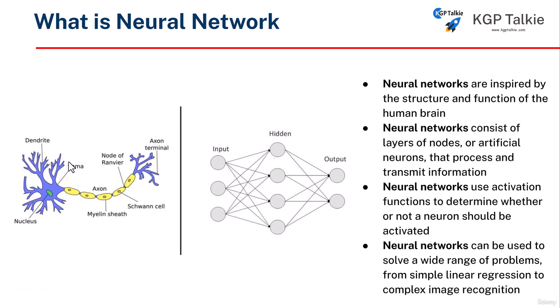In a human brain there are billions of neurons. One neuron is represented something like this, and the analogy of neural network is taken from the human brain and nervous system.